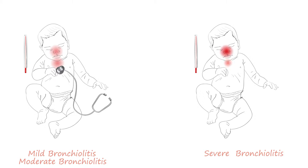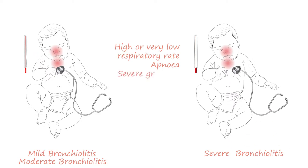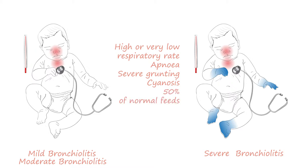Severe bronchiolitis is concerning and the infant appears very unwell. They can have a very high or low respiratory rate and even apnea — episodes where they stop breathing altogether. There is severe grunting, and possibly cyanosis and paleness. The child has difficulty feeding, taking in less than 50% of normal feeds. All these features indicate severe bronchiolitis.